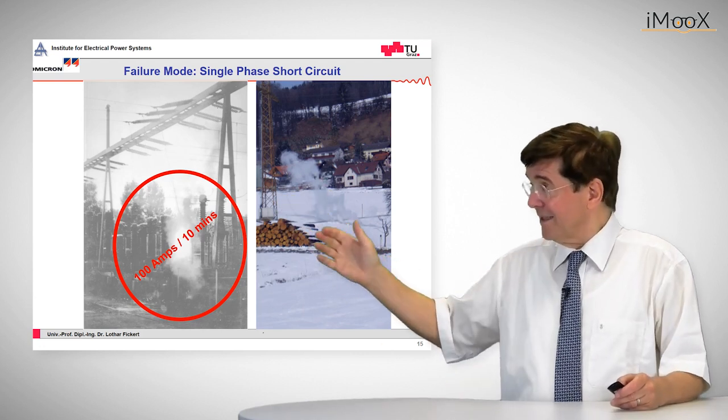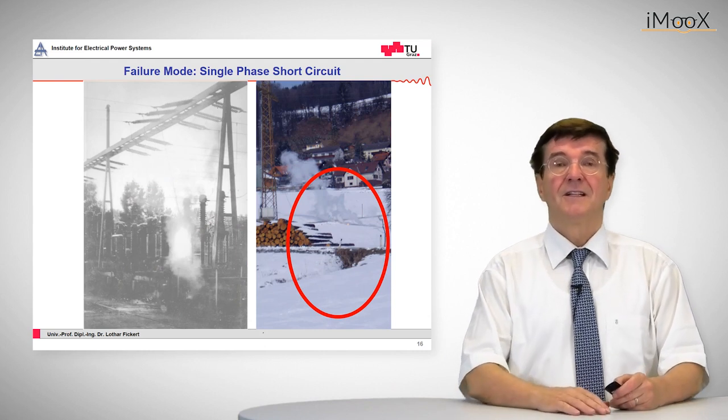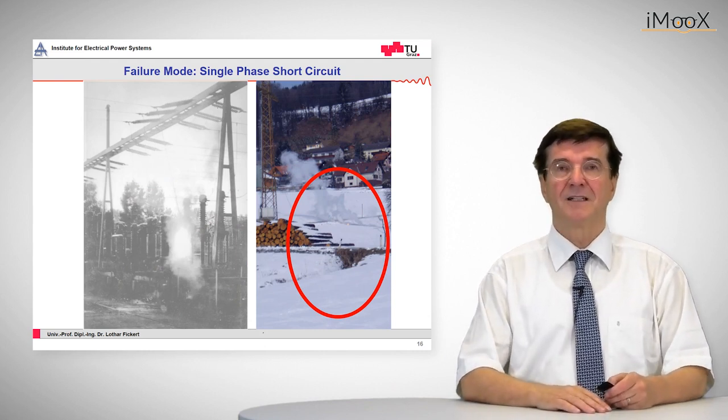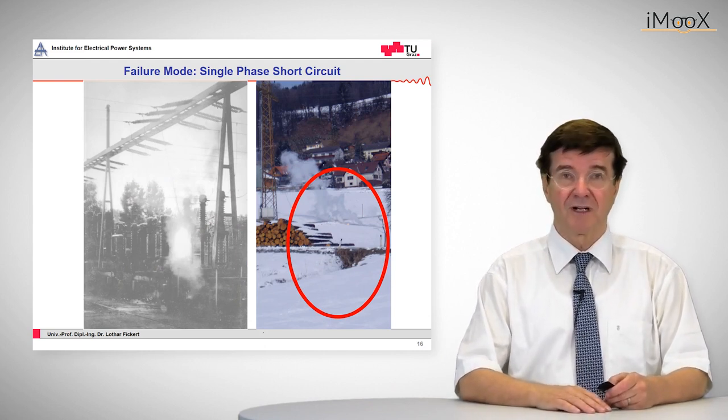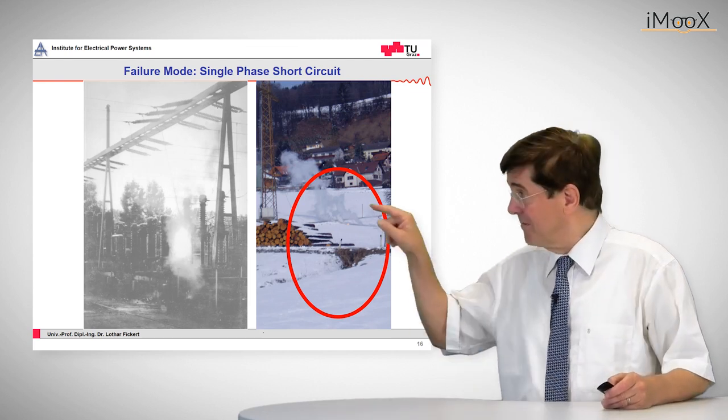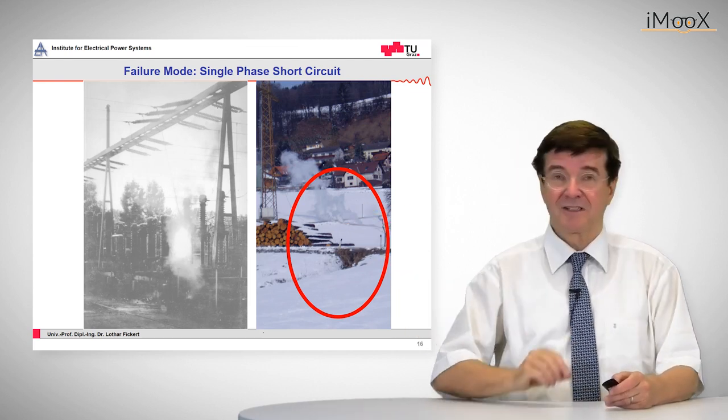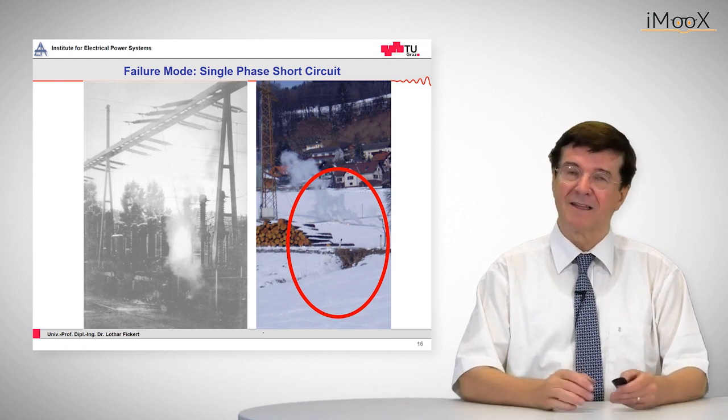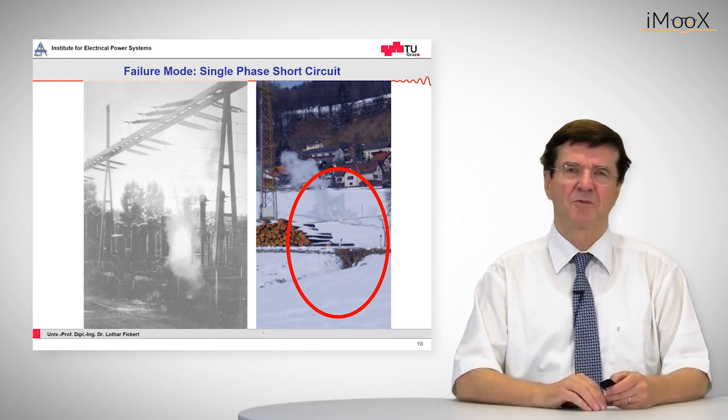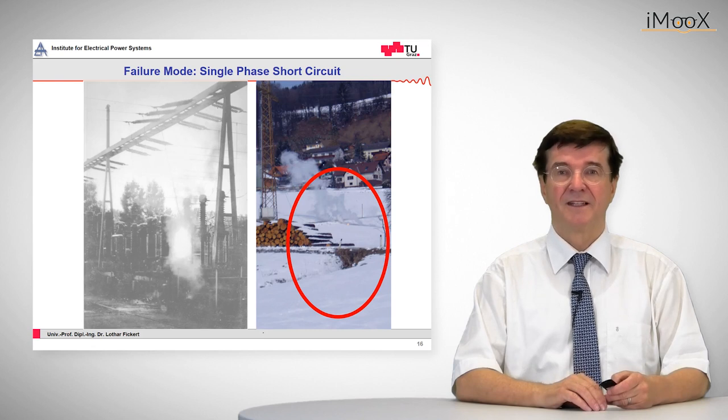Also to our right side we see a fault in an overhead line system where a conductor has broken and fallen down to ground and if you look carefully into the middle of this red circle you see a white blot. This is where the arc burns and again this arc is assumed to burn with approximately 100 amps and that has already gone on for quite a long time.